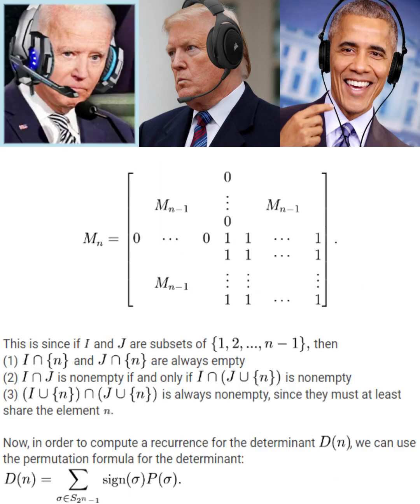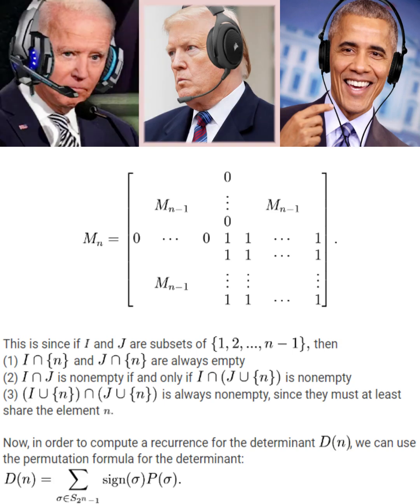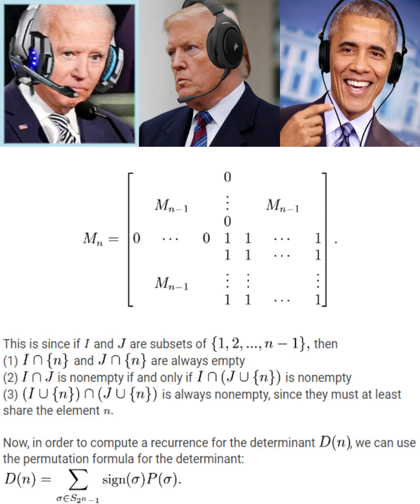Now, to obtain a recursive formula for D of N, we can use the permutation formula for the determinant. What the fuck is that? I thought the only way to compute the determinant of a matrix is to use Lagrange expansion. Again Trump, you clearly didn't pay attention in your linear algebra class. This is another useful method for computing the determinant, and in particular would be more appropriate for this problem than Lagrange expansion.